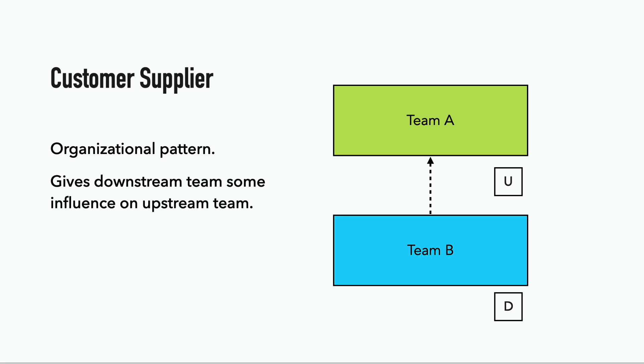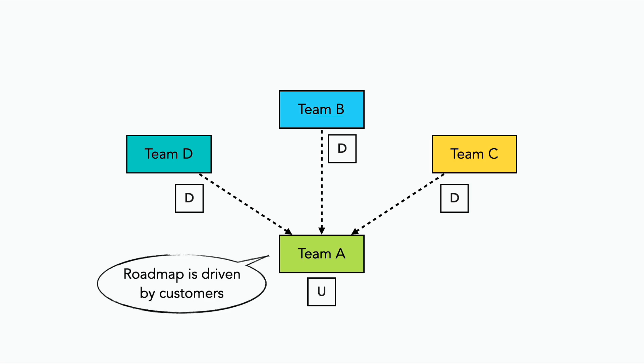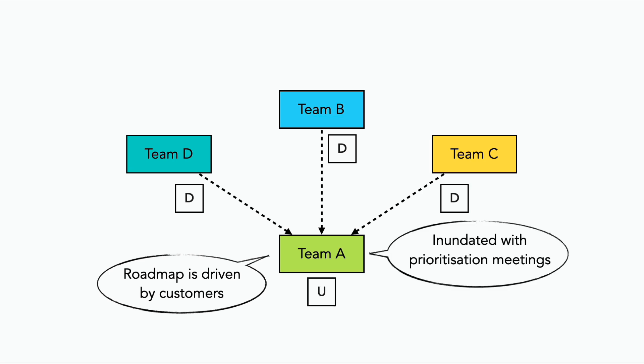Another organizational pattern is the customer-supplier pattern for teams with an upstream-downstream relationship, where the upstream team gives the downstream team some influence on its priorities and backlog, so the power dynamic between them is no longer one-sided. But you should avoid having too many customer relationships and yielding too much influence to customers — such as giving them the ability to veto your planned changes — because the team in the middle is going to lose much of its autonomy as its roadmap becomes driven by its customers.